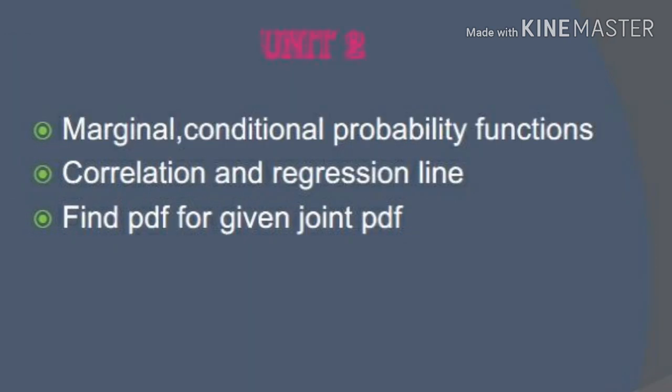Then second unit — so second unit is important. What is important is we can find the PDF, probability density function, that means marginal function and conditional probability function. The first topic is that, and the second topic is regression line and correlation. Correlation is important for 2 marks. We can find the joint PDF and solve Z value X plus Y.